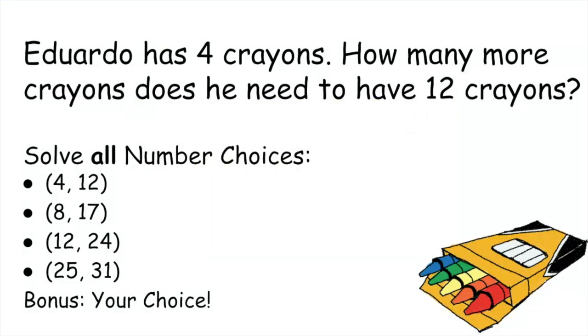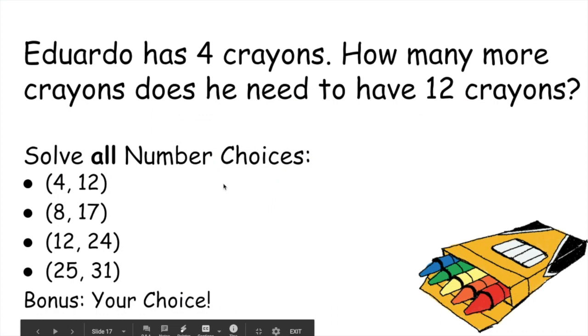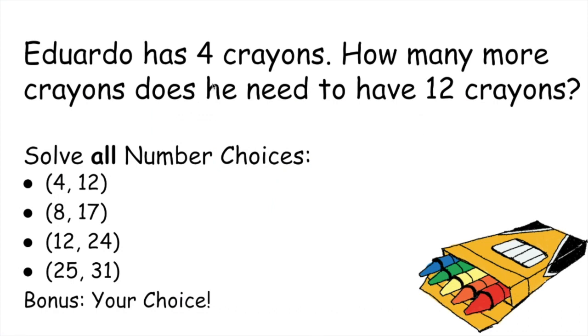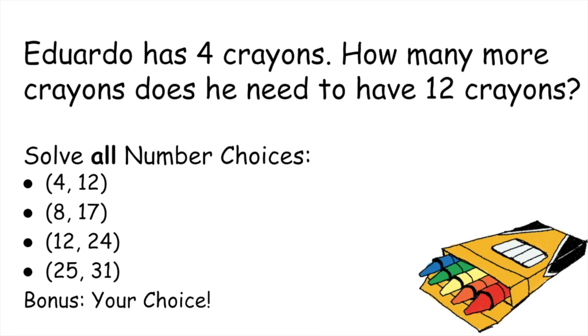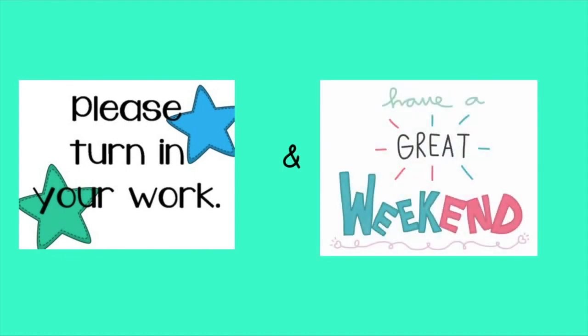Now it's your turn. I would like you to solve all of the number choices of this activity. We did 4 and 12 together — now you can do 8 and 17, 12 and 24, 25 and 31, and a bonus which is your choice of numbers. Please let me know if you have any questions about this lesson or the activity. Take a picture of your work when you are done and upload it to the portfolio page. I hope you guys have a great weekend. Bye!